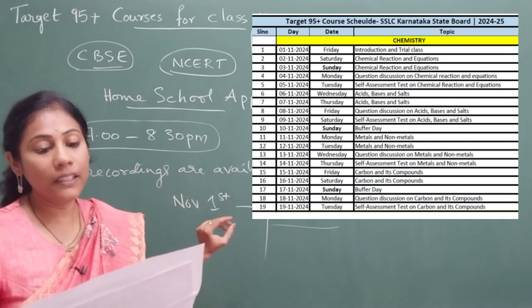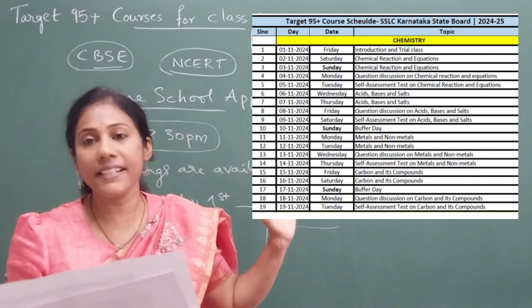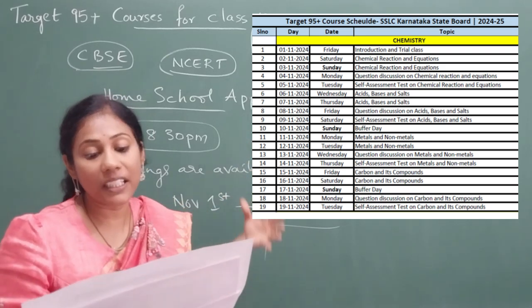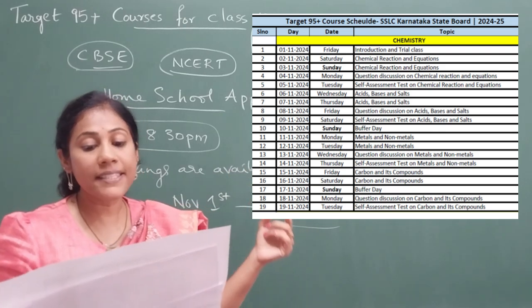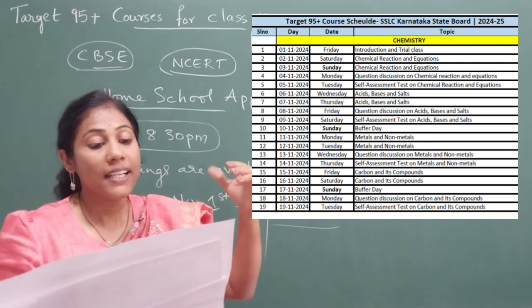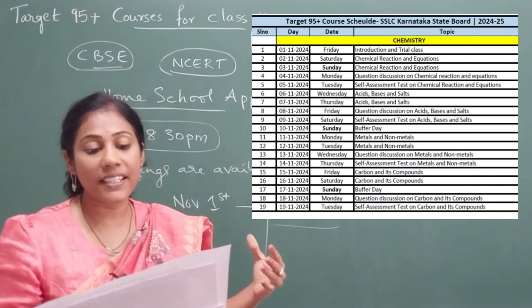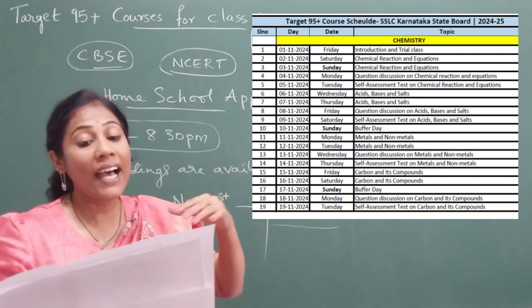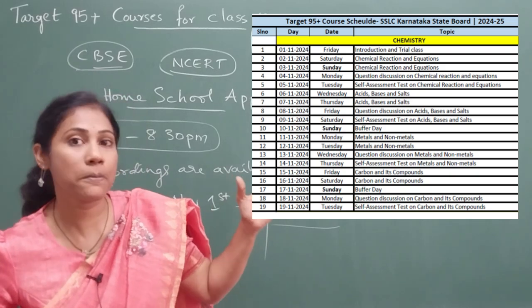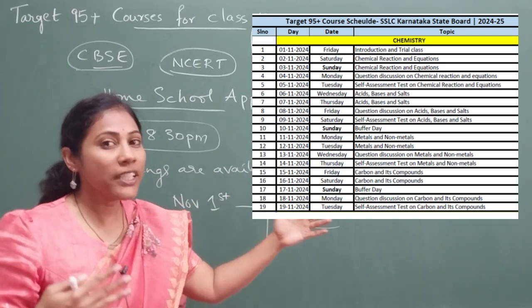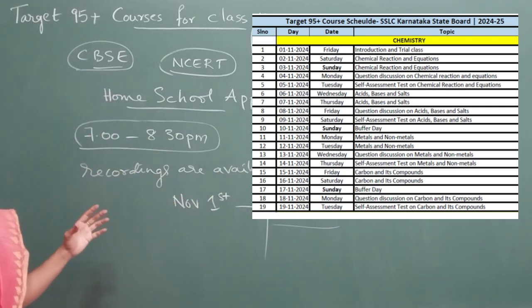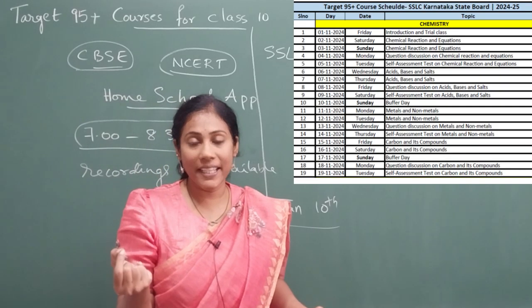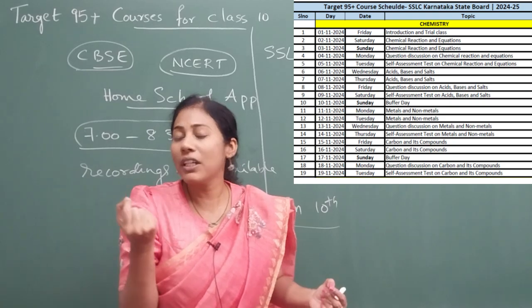If you look at the timetable, Day 1 — November 1st — is an introduction and trial class. From Day 2, that is November 2nd onwards, I am starting with the chapters. For example, chemical reactions and equations will be covered on the 2nd and 3rd, then questions on chemical reactions and equations on the 4th. After that you will write a self-assessment test, and then I move to the next chapter. Each chapter gets about two to three days, and bigger chapters up to four days.